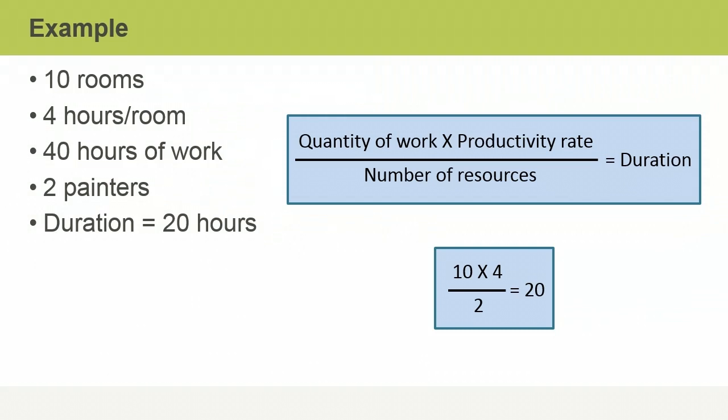Here is a simple example of how parametric estimating works. Suppose you have 10 rooms to paint. Your productivity rate, based on previous painting projects, is 4 hours to paint each room. You multiply the 2 amounts, which results in 40 hours of work. You intend to use 2 painters, so you divide the result by 2. So the duration equals 20 hours.